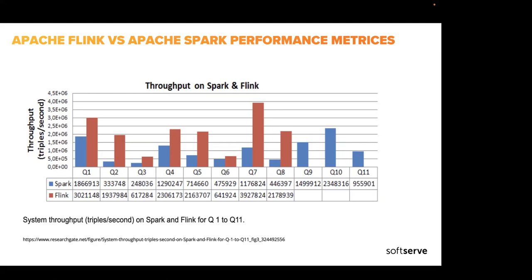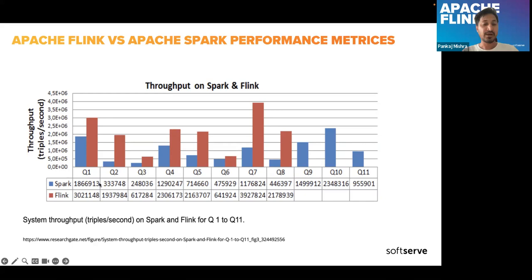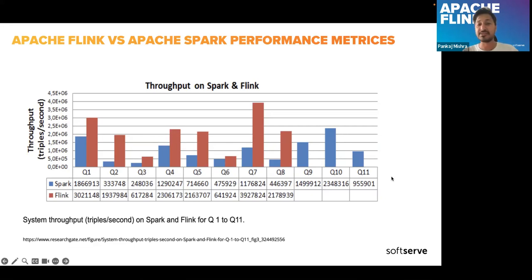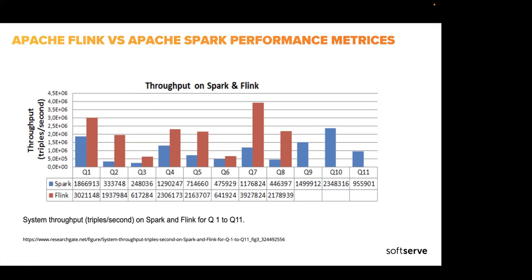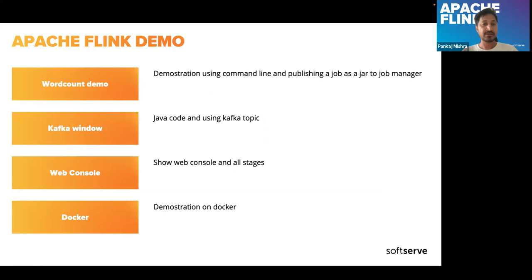Regarding Q1 to Q11 in the chart: it's a dataset they prepared, kind of iterations — Q1 is one piece of data and they put the load, then tried to find out the results. These are the iterations they played with different loads, and across mostly all iterations they came out with these results.